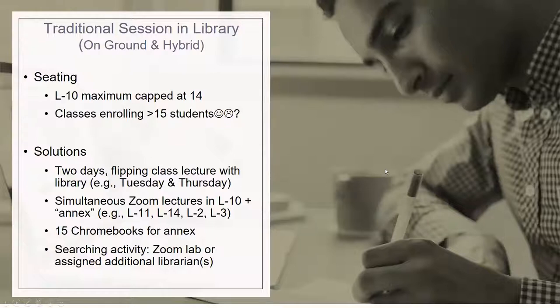If you opt for the traditional session in the library, which is most likely for an on-ground class and an option in a hybrid class, the seating in L10 is now capped at 14. We had seating of 28, but for social distancing we now have 14. Classes enrolling 15 or more students—we had quite a few of them last semester—presented some challenges. So what were the solutions we came up with?